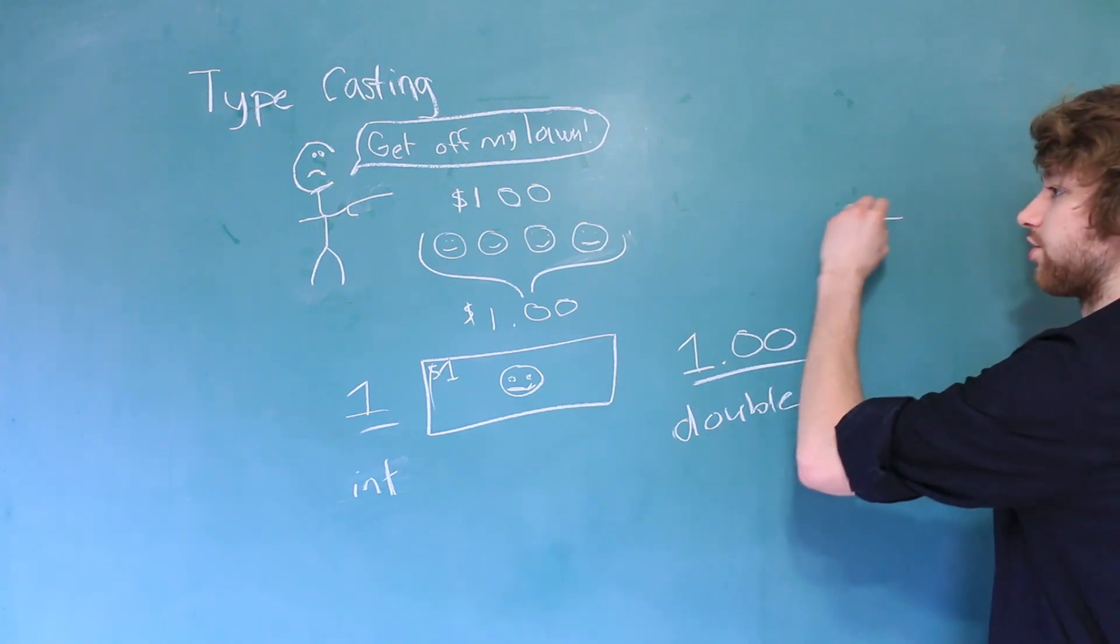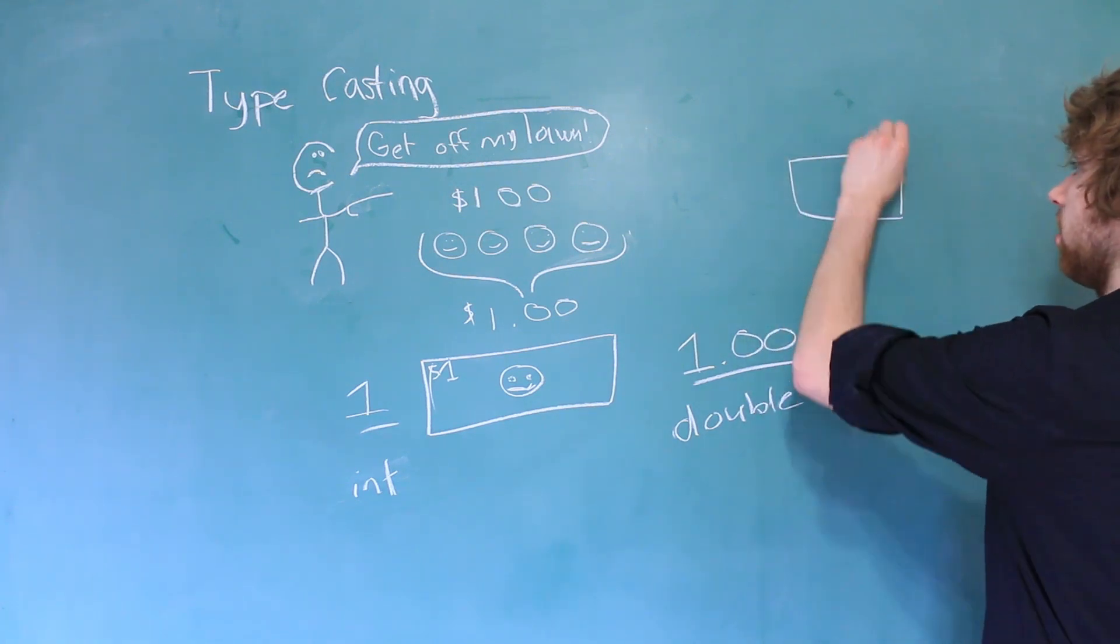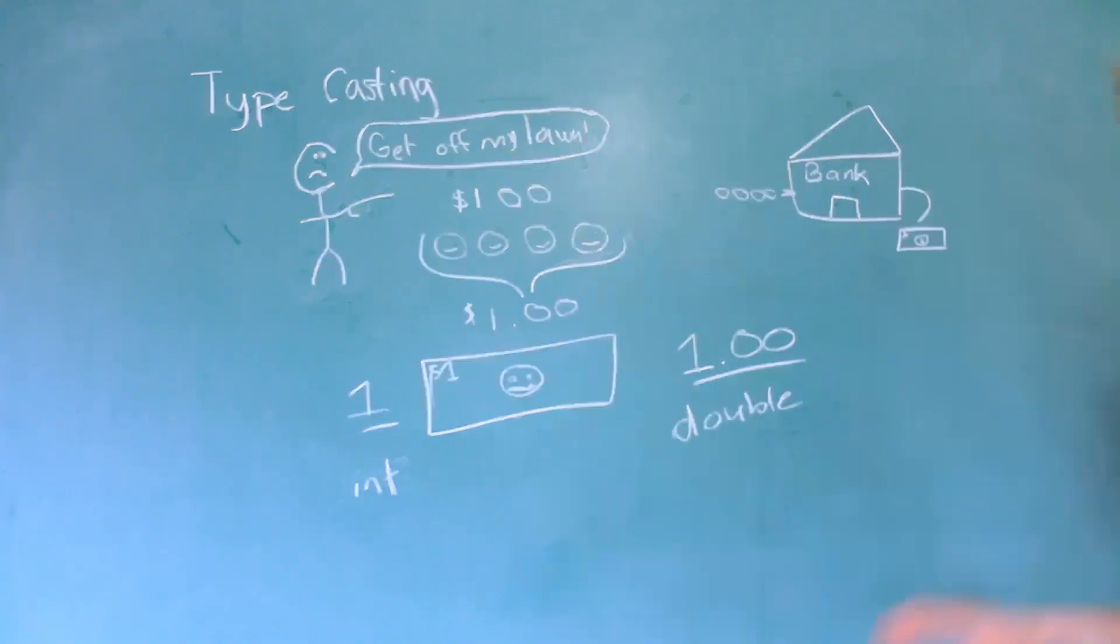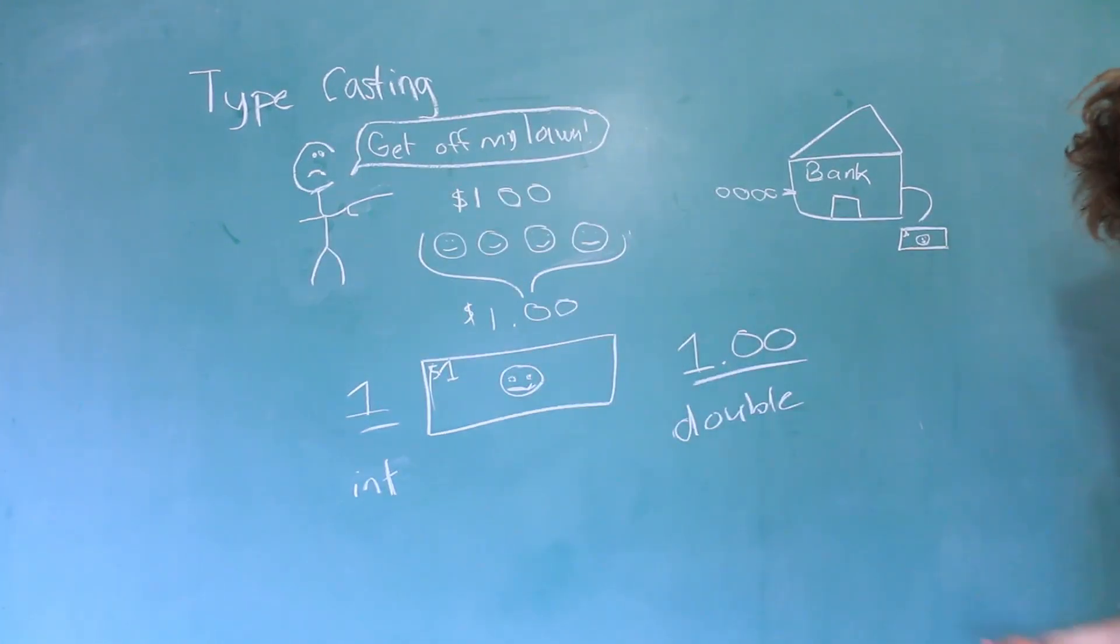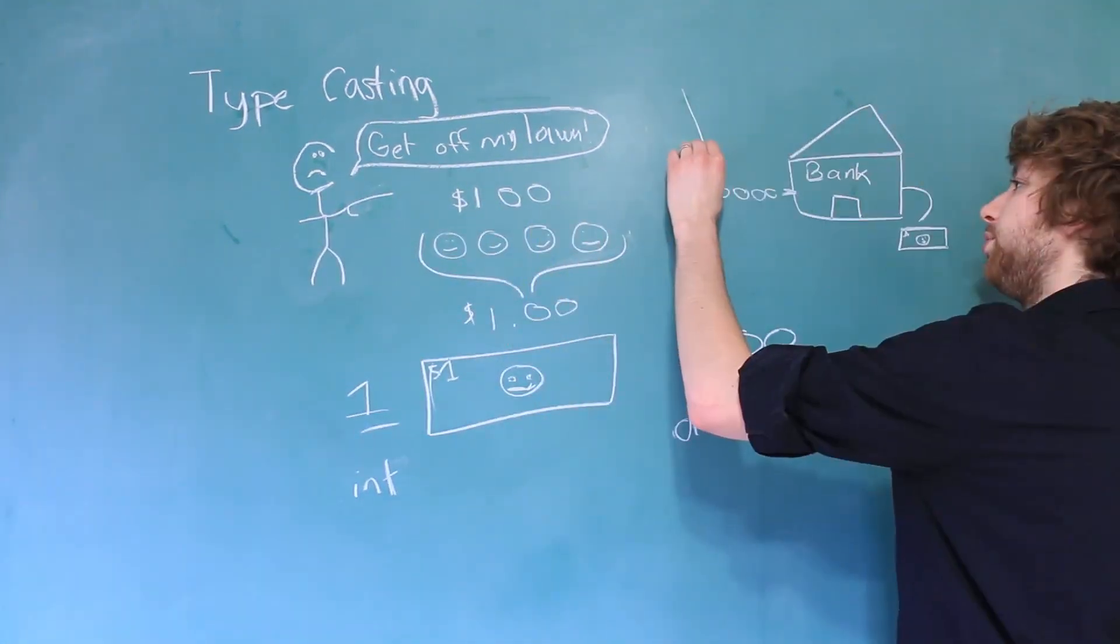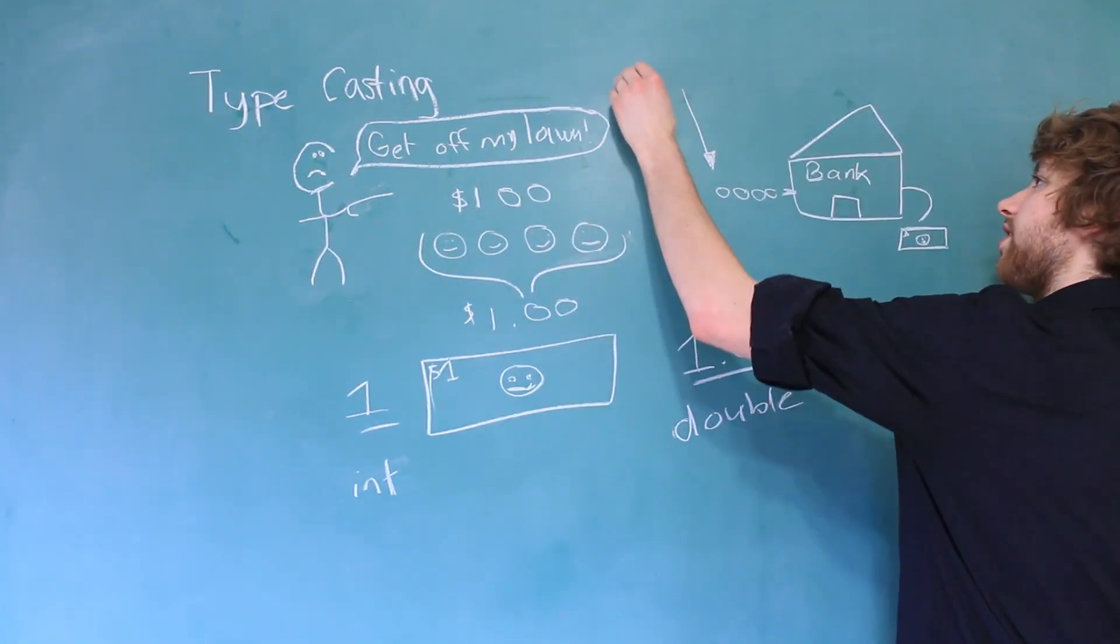So to fix this problem you can go over to the bank and exchange your quarters for a dollar. So you hand your quarters in and out comes a dollar. Now that you've got an actual dollar bill you can go back give it to the old man, and he's happy.